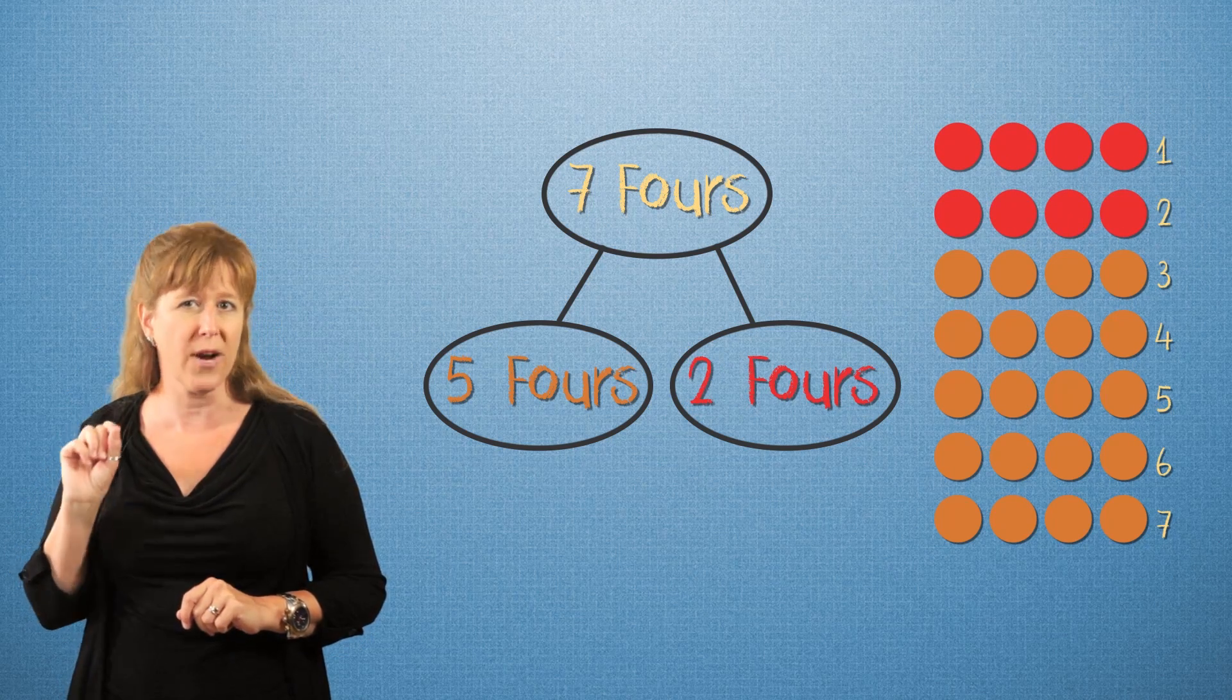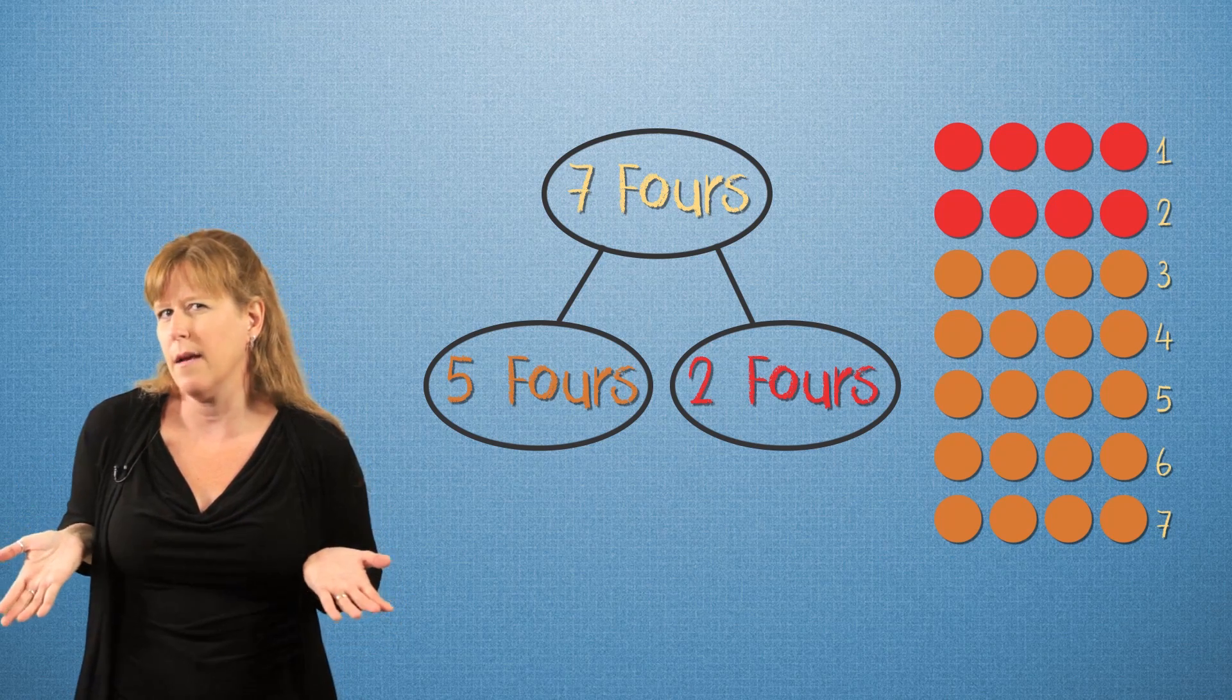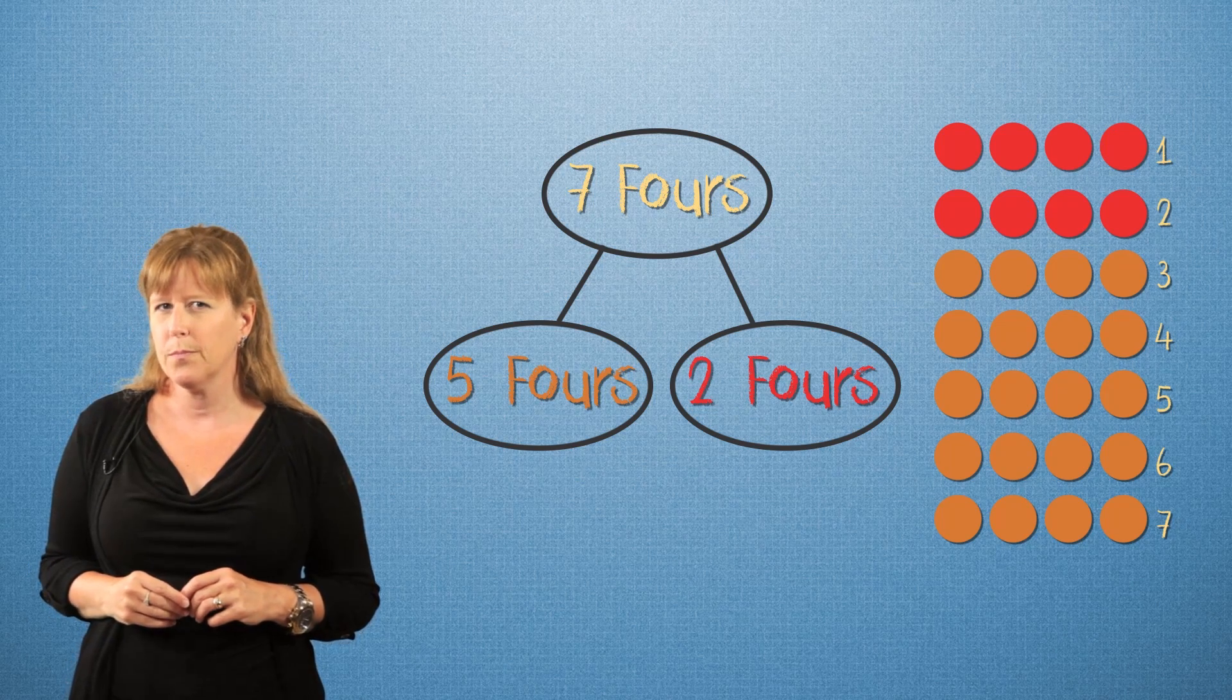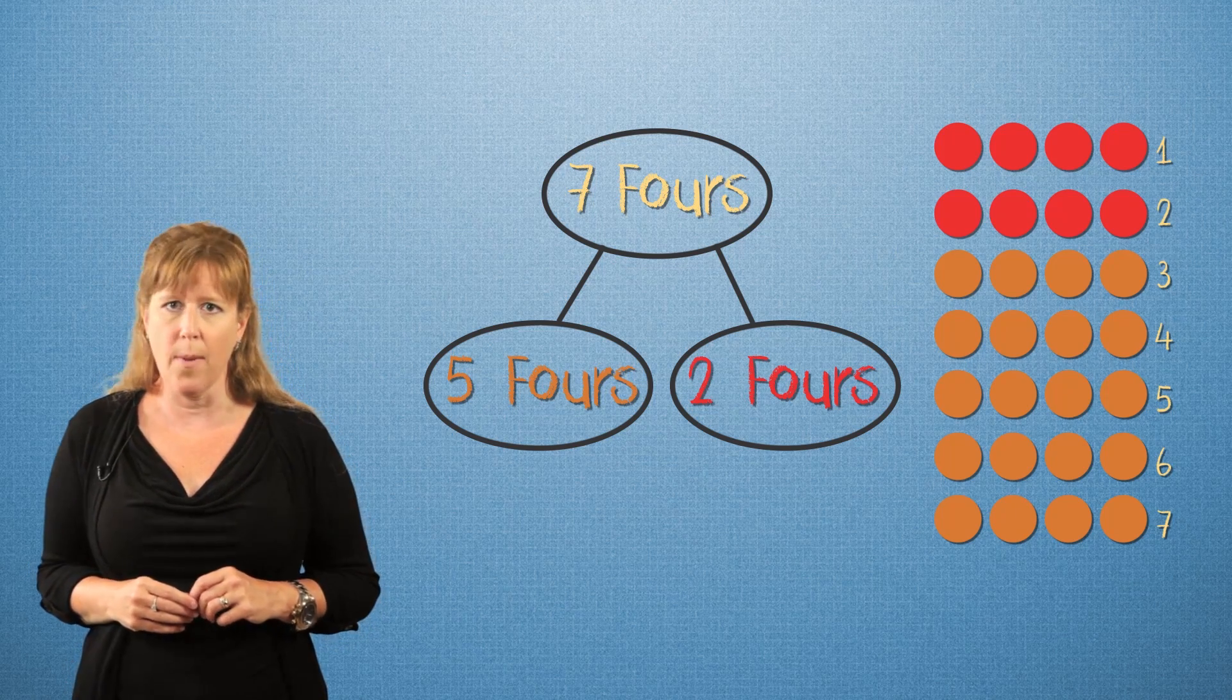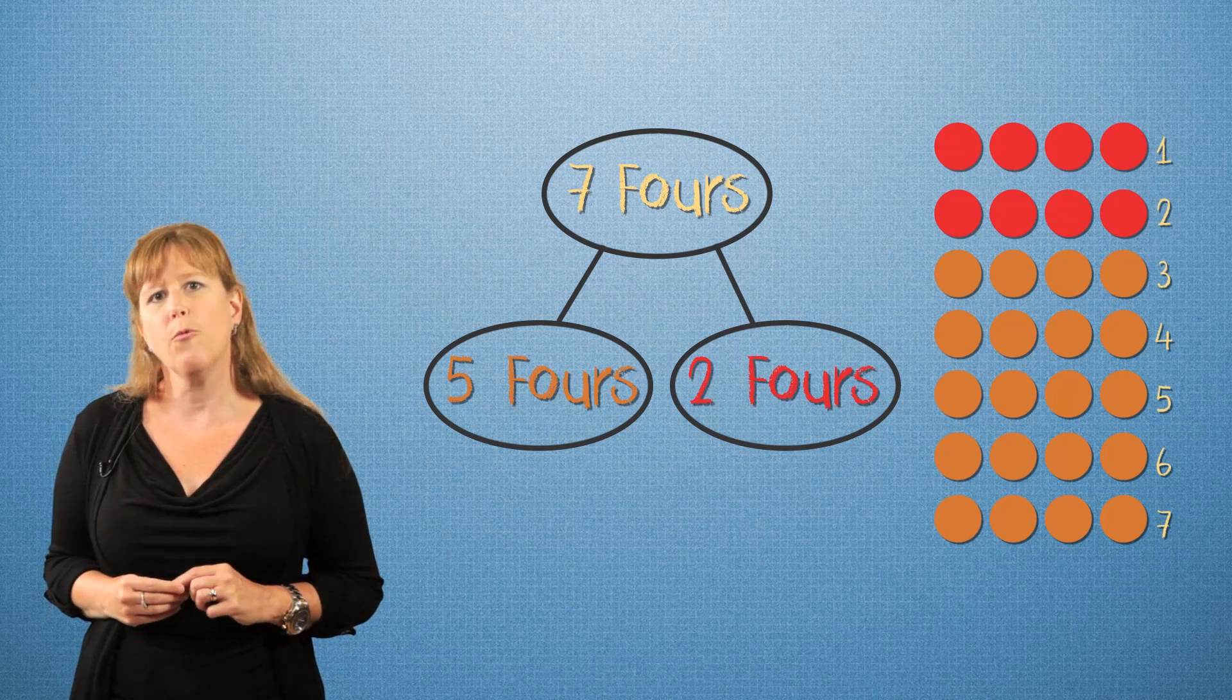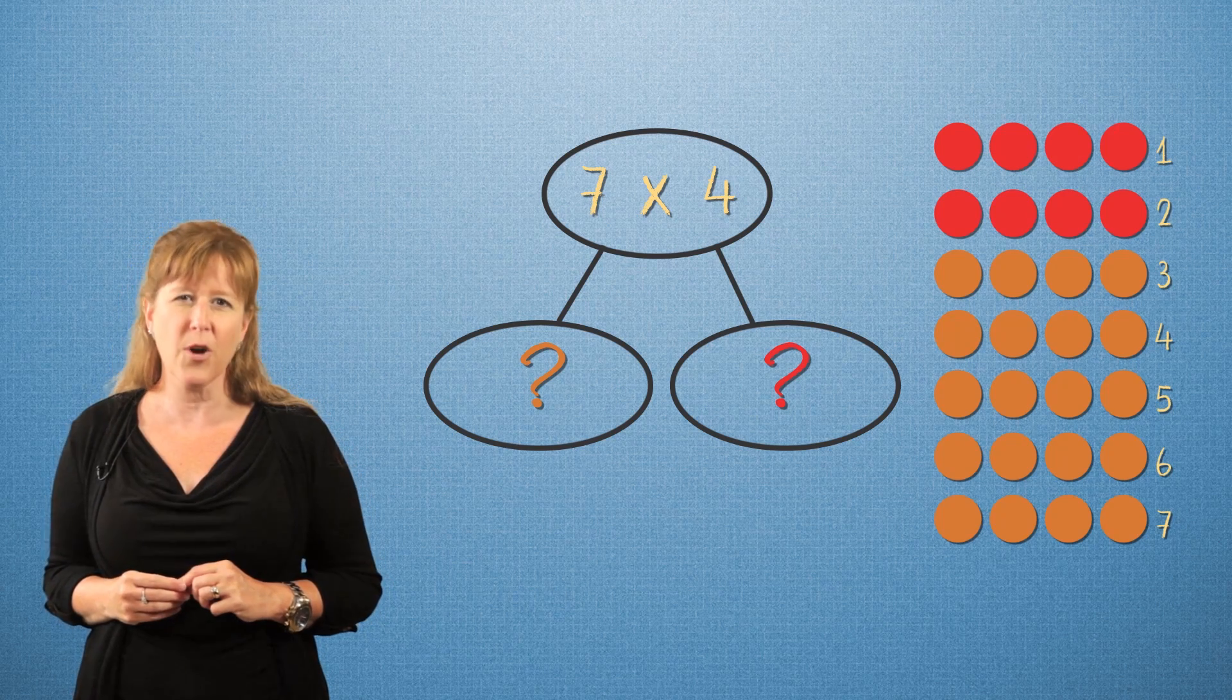Remember, we could break them down any way we like, but let's make it easy. Fives are nice and twos are nice, too. Now let's look at this number bond as a multiplication expression. If we have seven times four, what should these two expressions be?